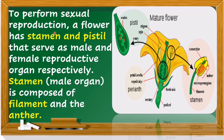To perform sexual reproduction, a flower has a stamen and a pistil that serve as the male and female reproductive organs respectively. The stamen is the male organ and is composed of a filament and an anther. Here is the pistil and the stamen — this is the stamen part enlarged. They are the male organ of the flower.